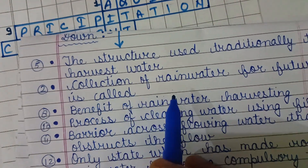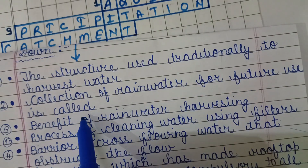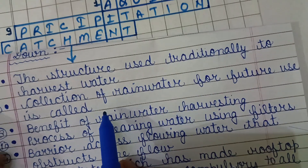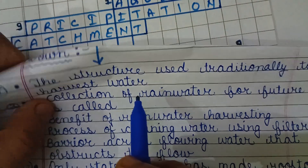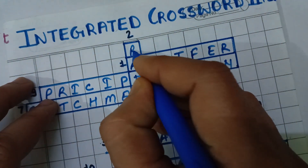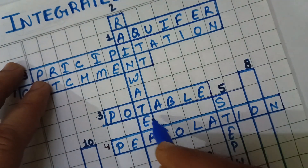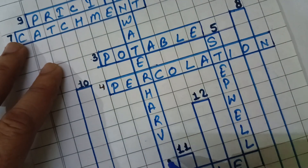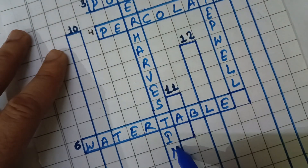Collection of rainwater for future use is called rainwater harvesting. This is in the second column downward — H-A-R-V-E-S-T-I-N-G.